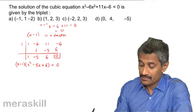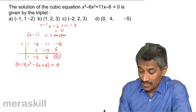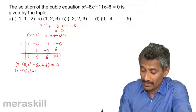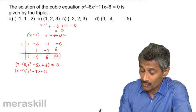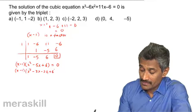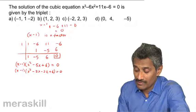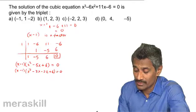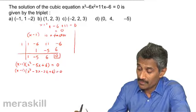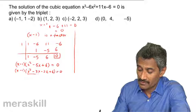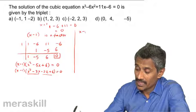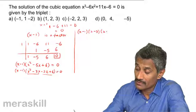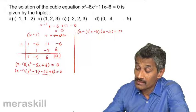So we have (x - 1)(x² - 5x + 6) = 0. Splitting the middle term: x² - 3x - 2x + 6 = 0, because -3 + (-2) = -5 and (-3)×(-2) = 6. Taking common factors, we get (x - 1)(x - 3)(x - 2) = 0.